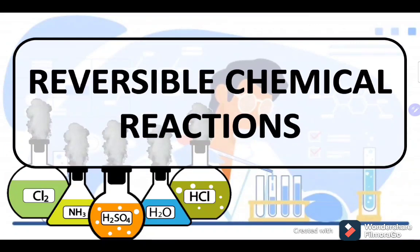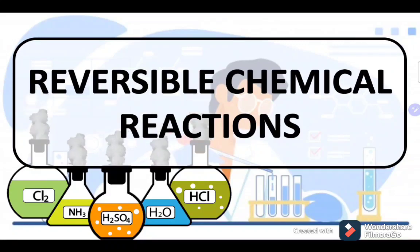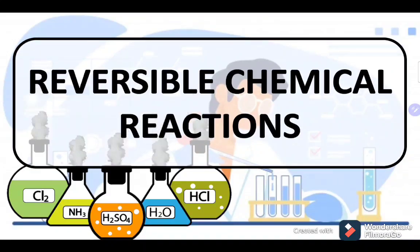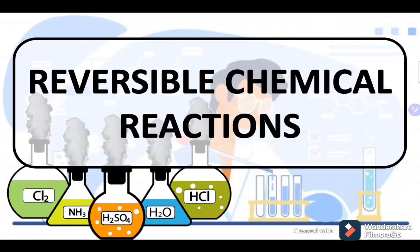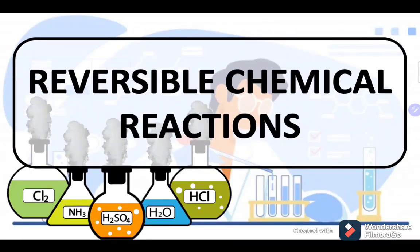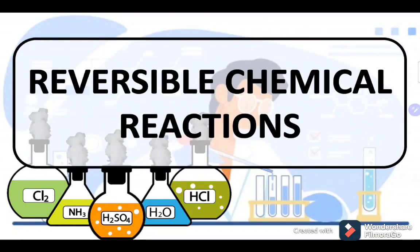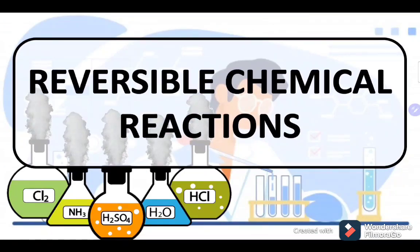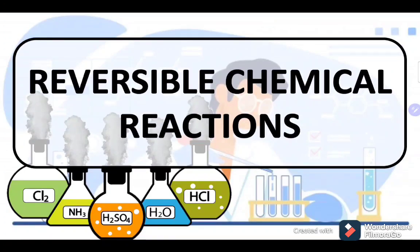Chemical reactions are processes undergone by certain substances to create new substances. Most of us know that chemical reactions are one-directional reactions. But in reality, there are other chemical reactions wherein when two reactants combine, they yield a product, and the product breaks down to yield again its original reactants. That example is under reversible chemical reaction.